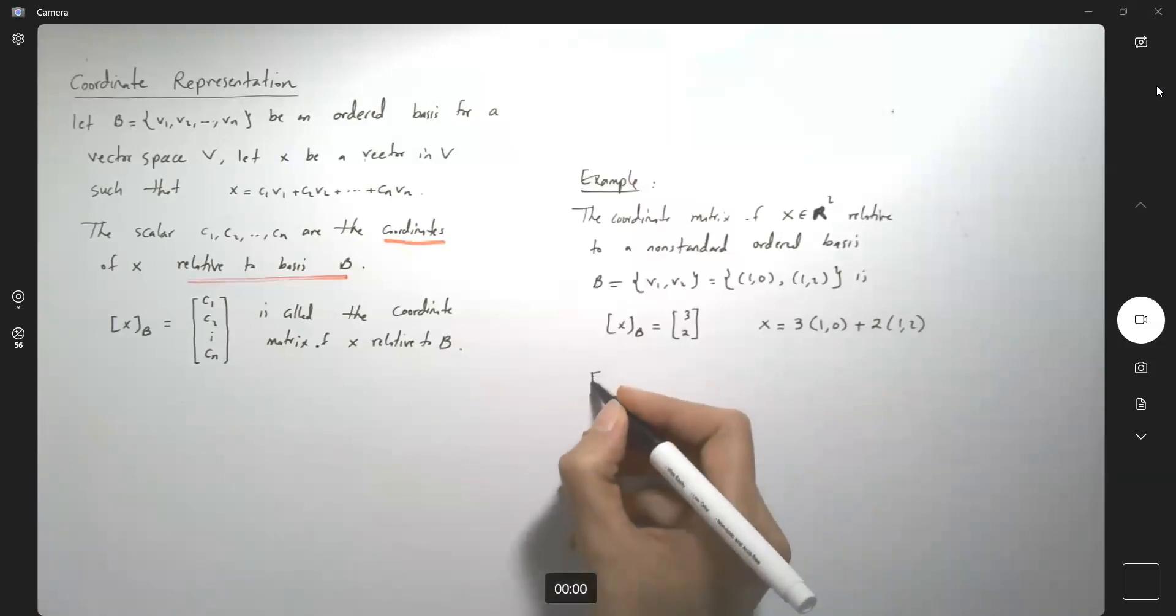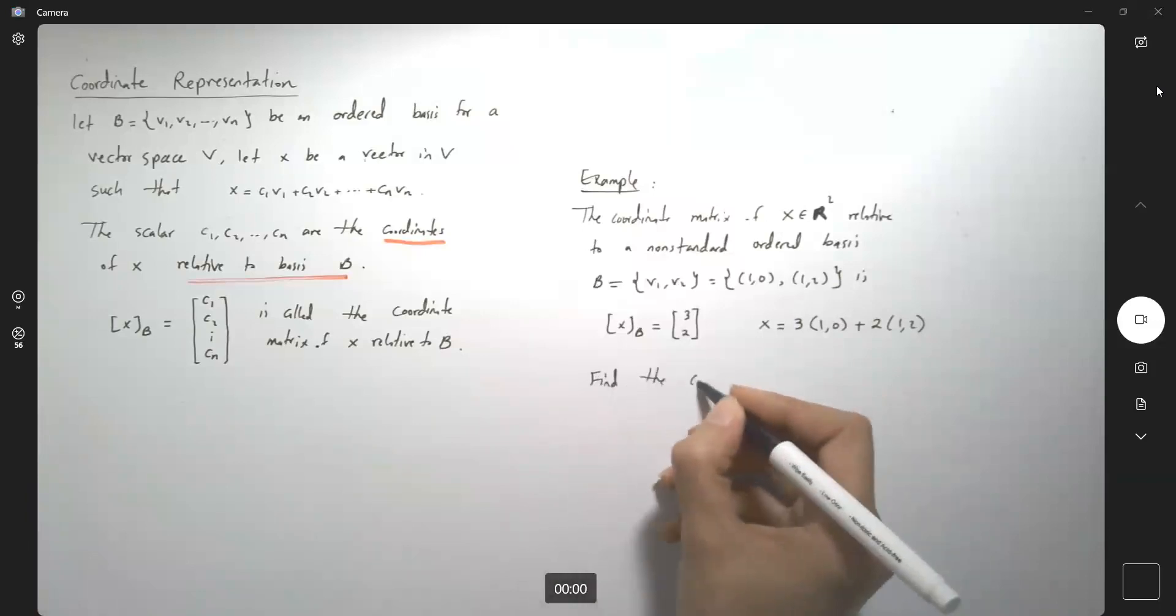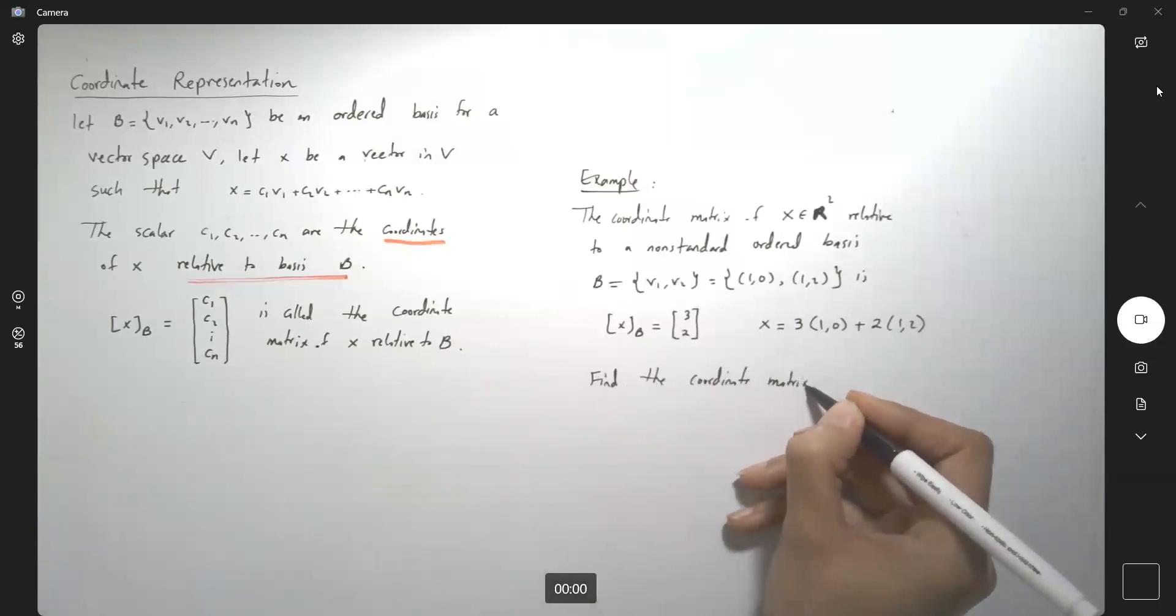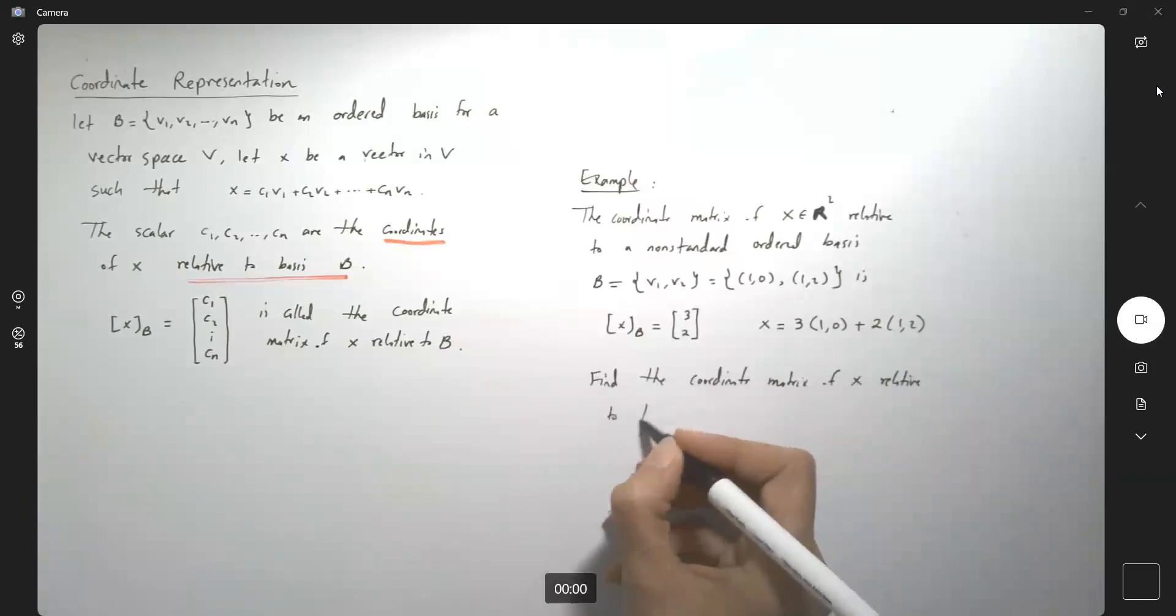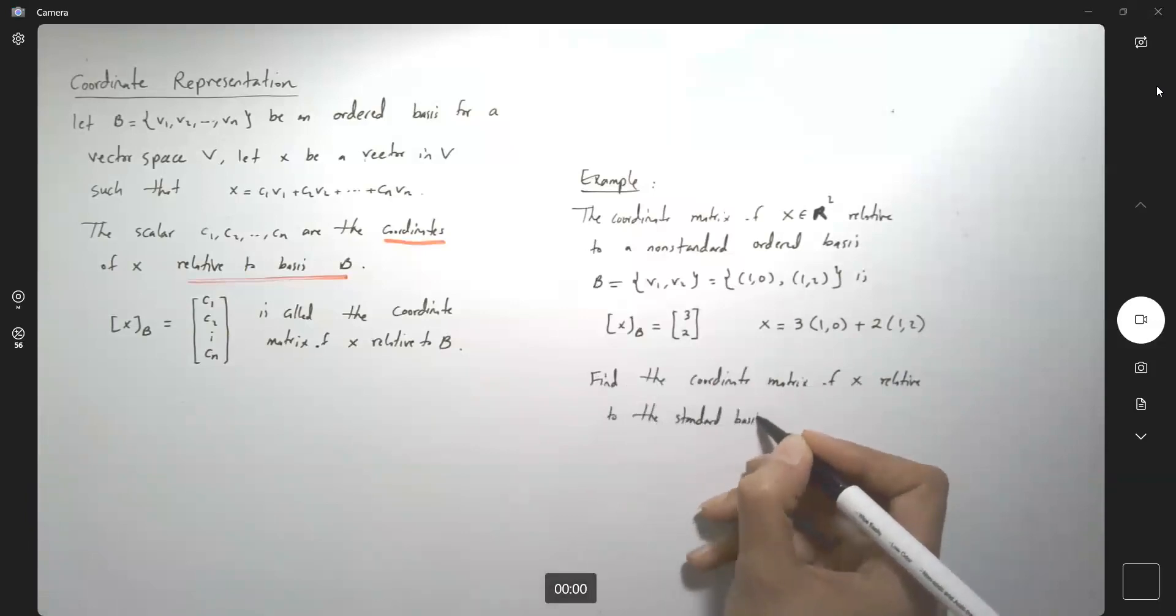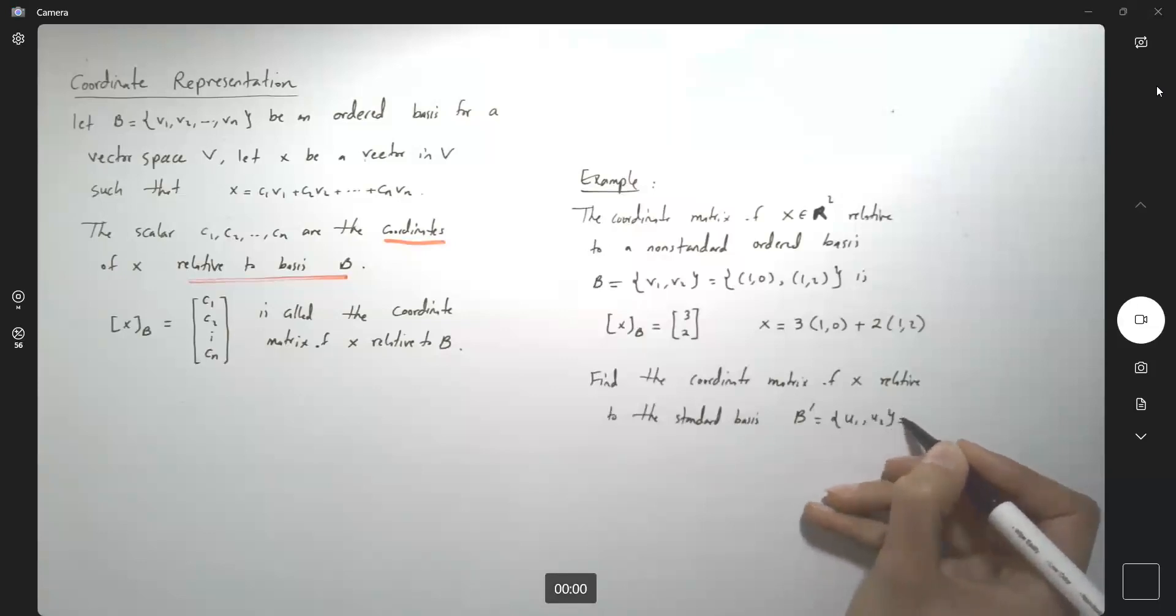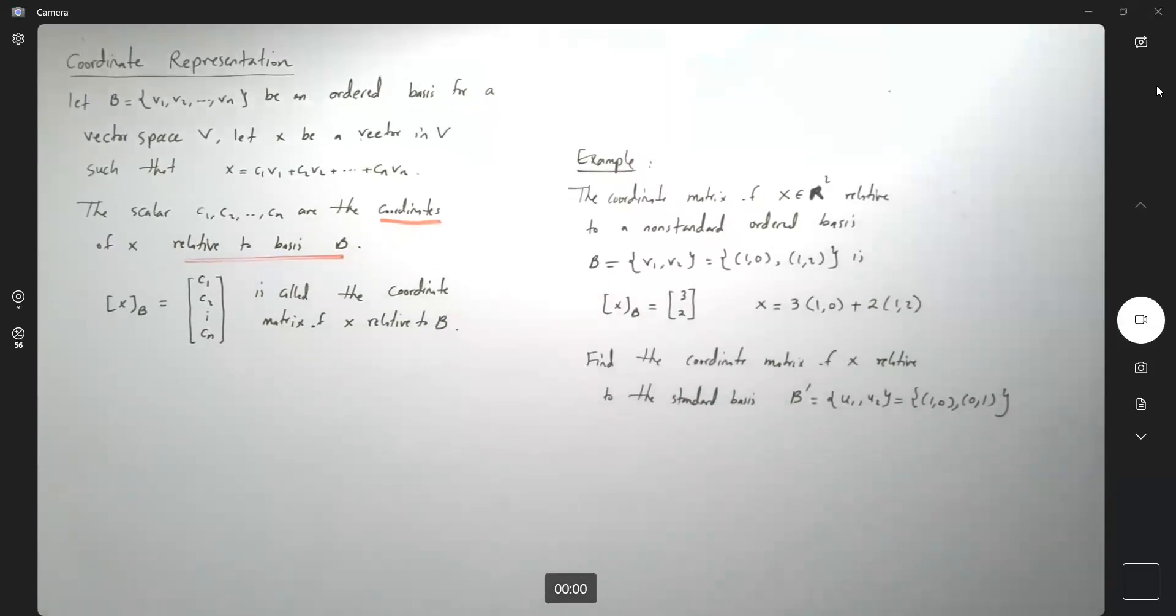Now the question says find the coordinate matrix of vector x relative to the standard basis. Remember the standard basis, u1 and u2, which is (1,0) and (0,1). Very good. Let's write down the solution here.